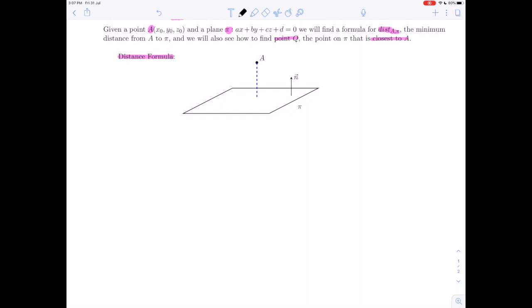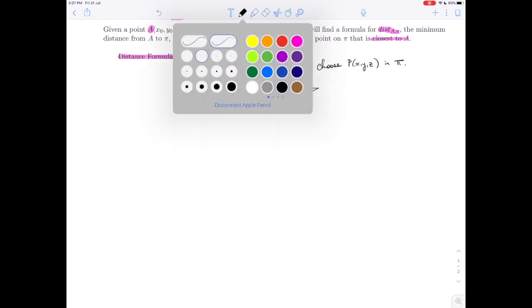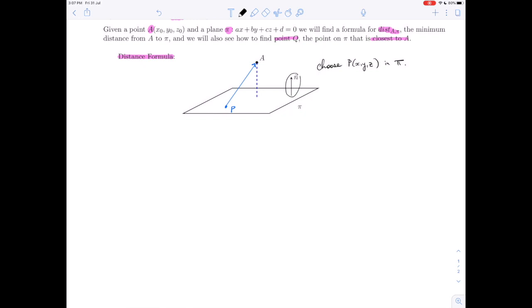We are going to first of all choose any point P (x, y, z) that's in the plane π. Let's draw that point here, P, and then construct the vector from P to A, or the vector PA. Now if I take my normal vector, I can redraw it anywhere I wish, so for the sake of my diagram, I'm going to redraw my normal vector there.